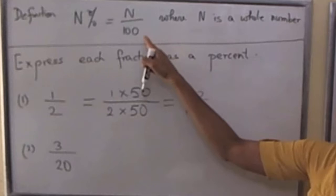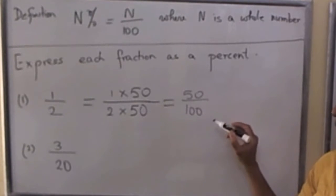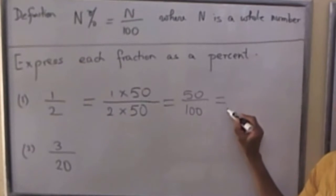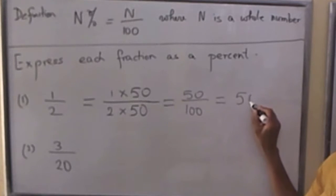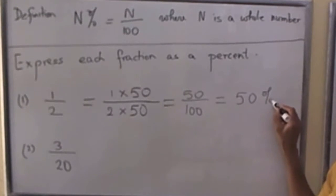As the definition says, 50 over 100 can also be written using the percent symbol. It is simply 50 with this percent symbol written like this.